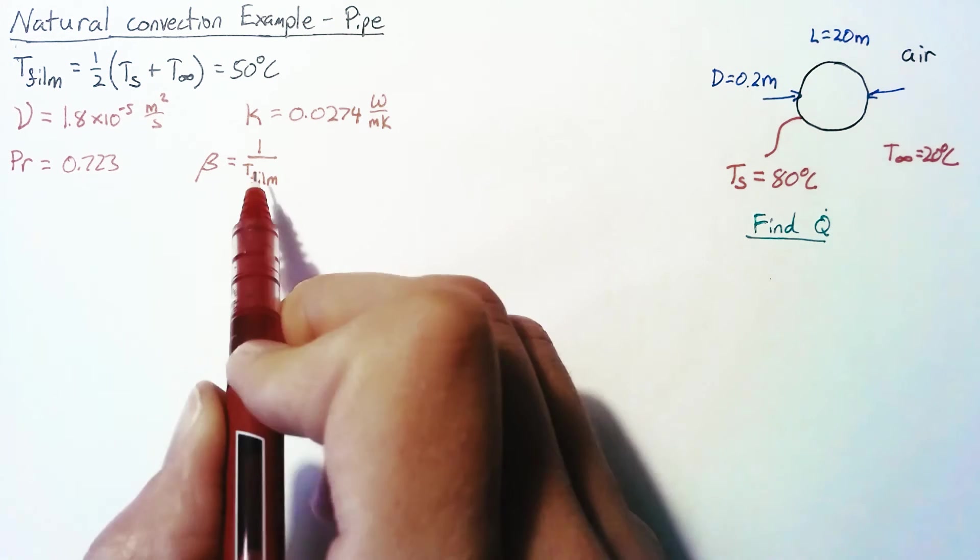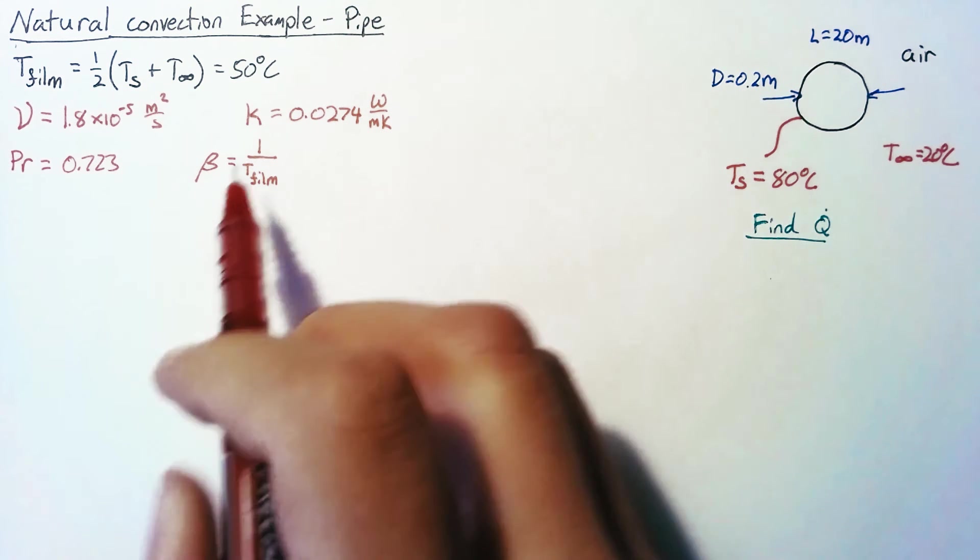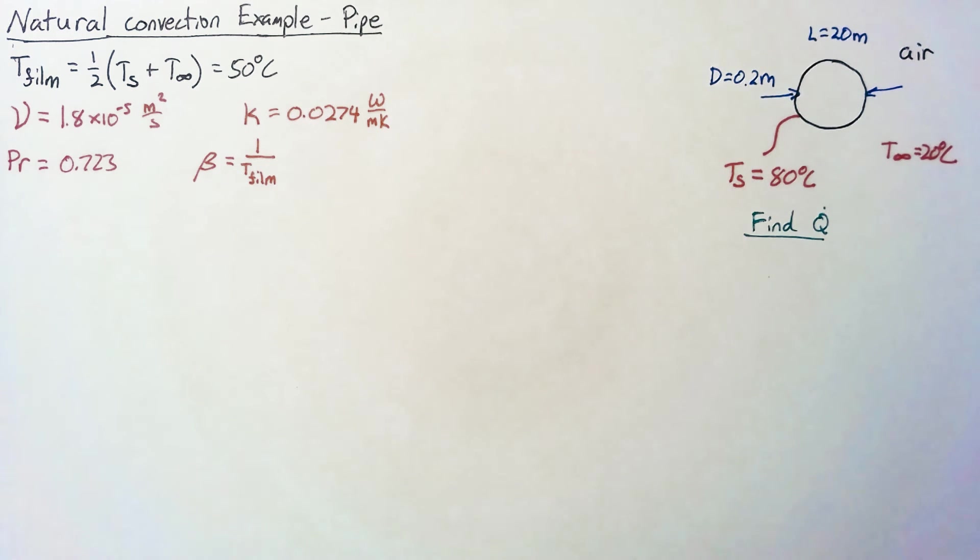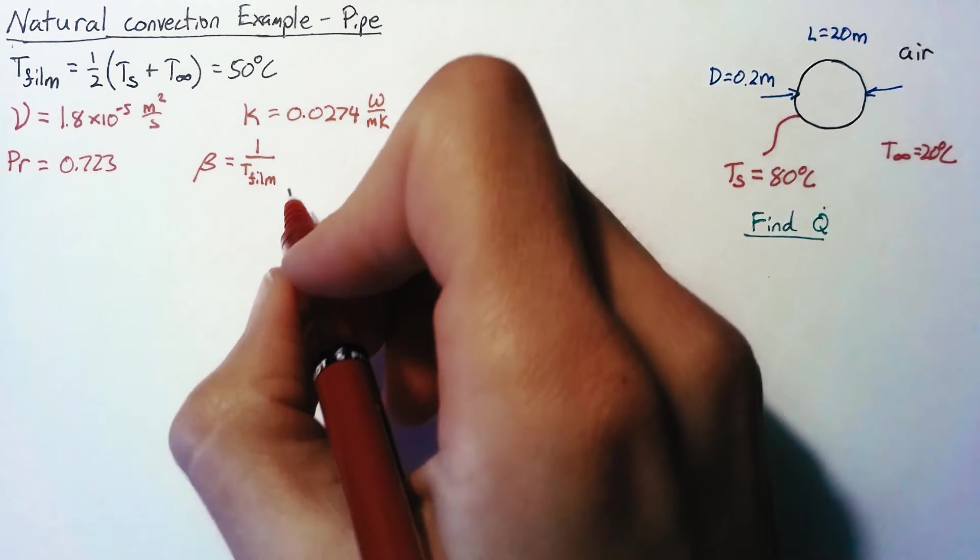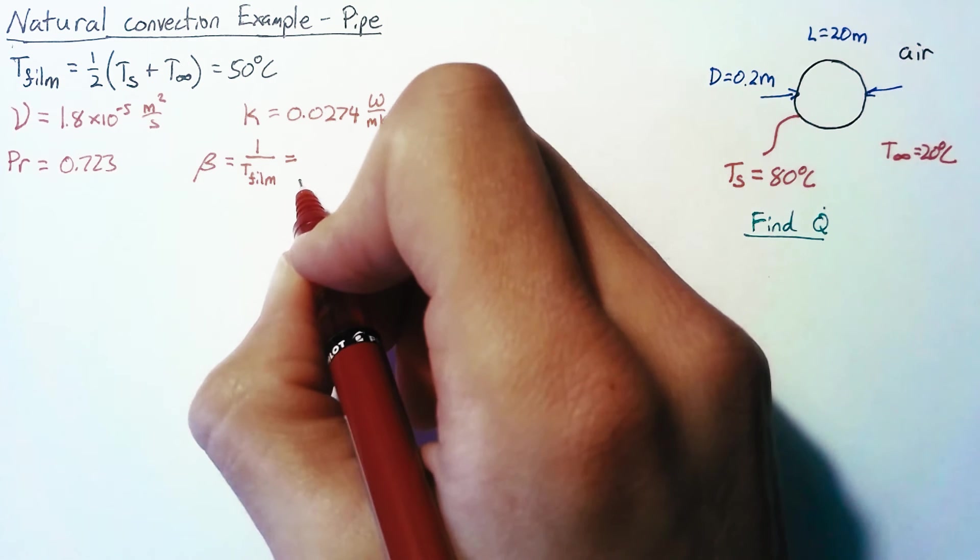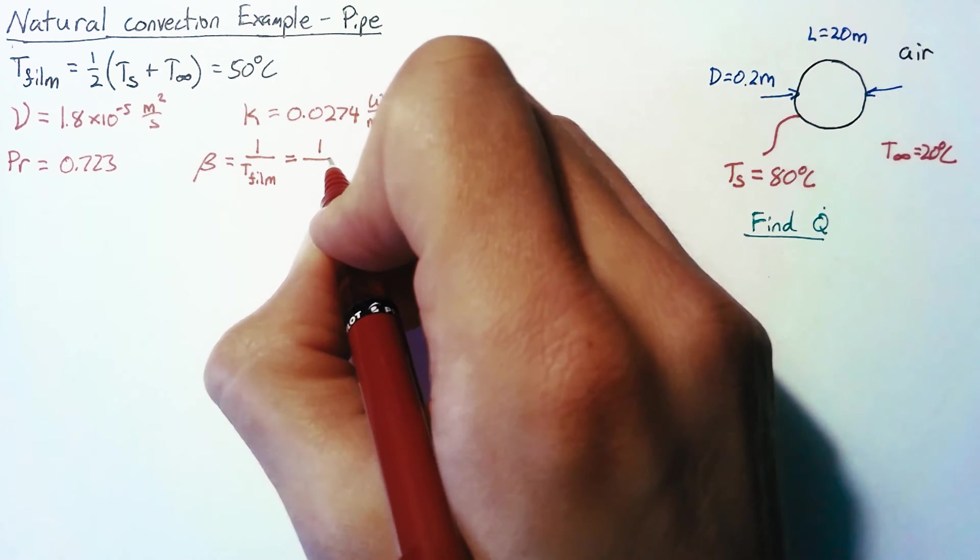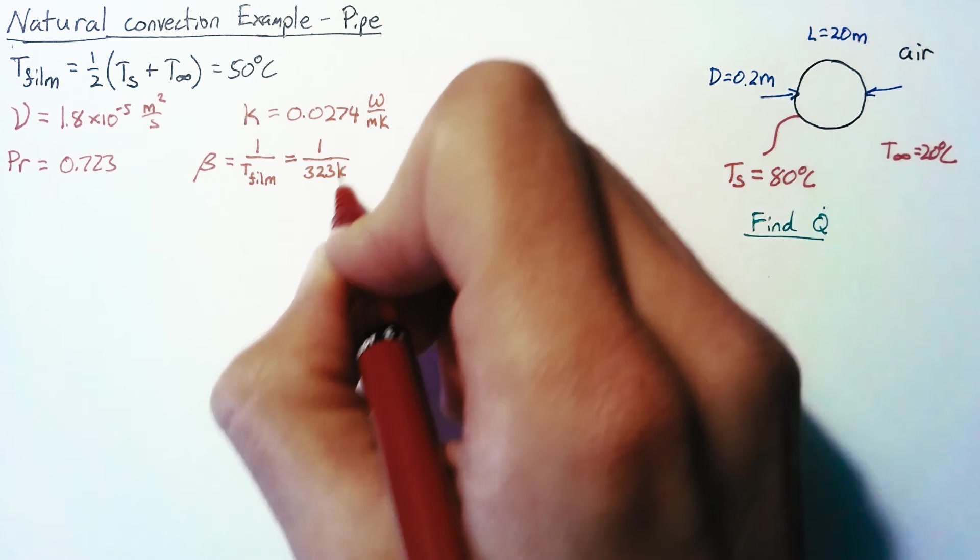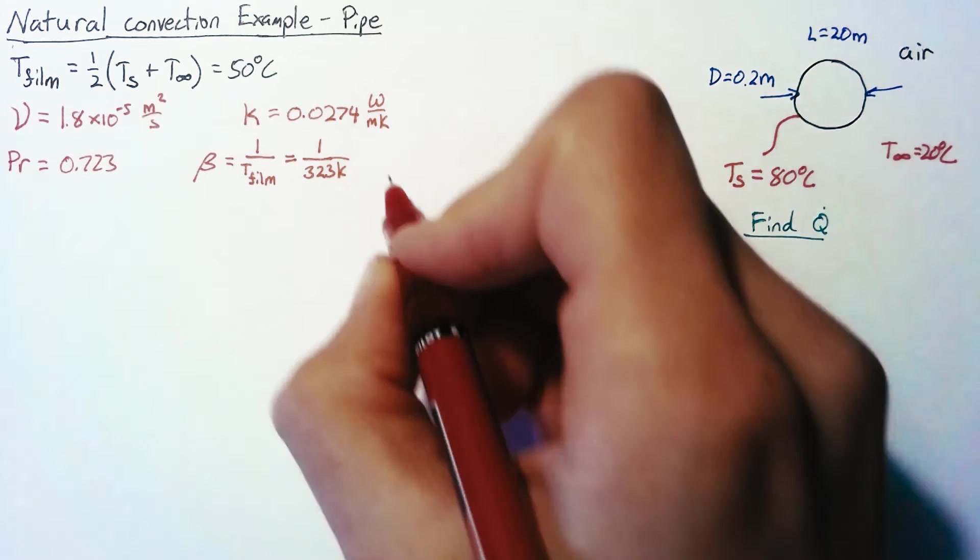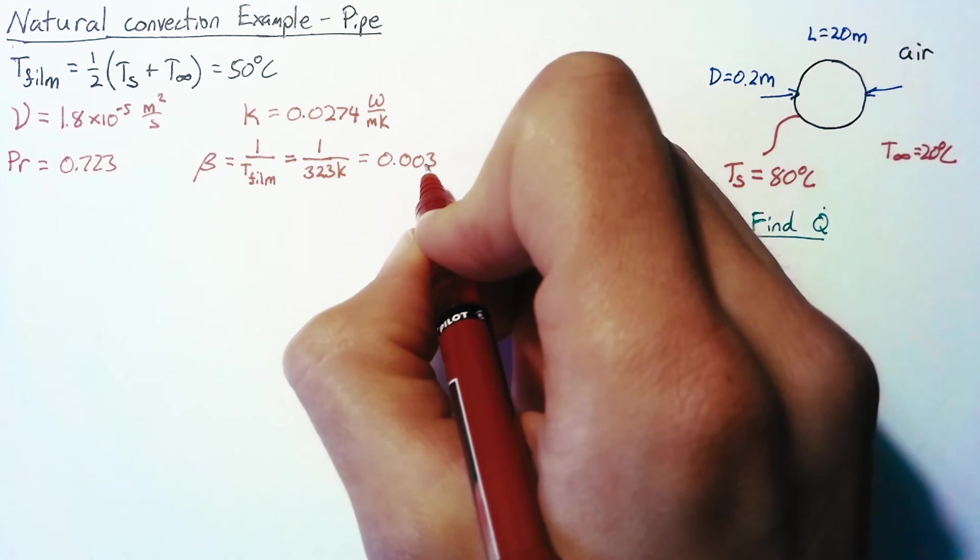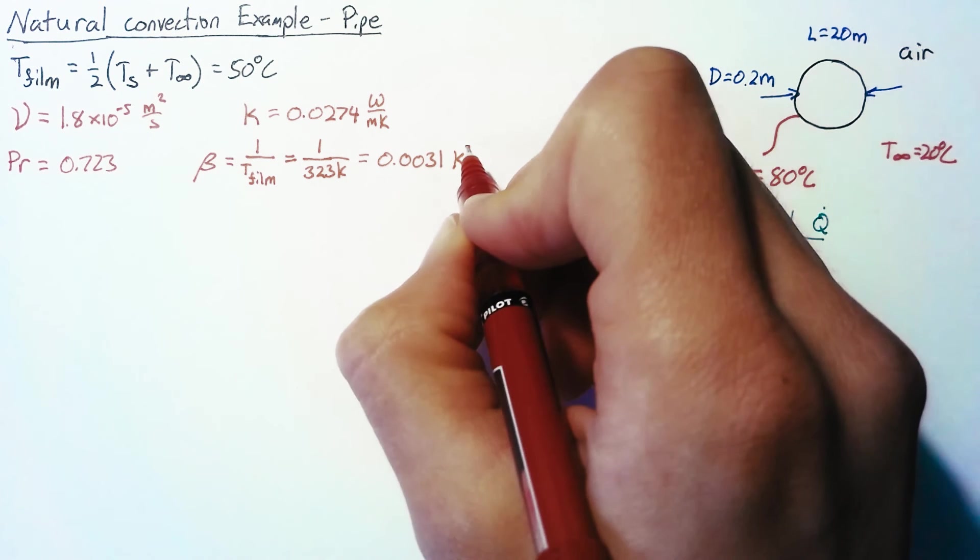Now, just as a word of caution, this equation only works for ideal gases. So as long as air can be treated as an ideal gas, we can go ahead and set beta as 1 over the film temperature, which for us is 1 over 323 Kelvin. Make sure that you use Kelvin as your value there. And that comes out to 0.0031 times Kelvin to the negative 1.